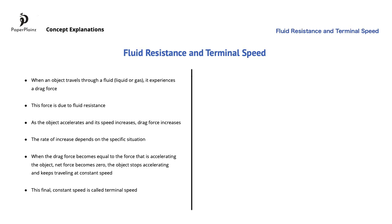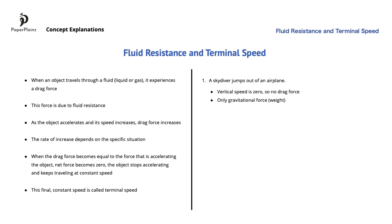Let's see how a skydiver reaches terminal speed. At the start, the skydiver jumps out of an airplane. Since at this moment her vertical speed is zero, there is no drag force yet, so only the gravitational force acts on the skydiver. The free body diagram for this situation looks like this.